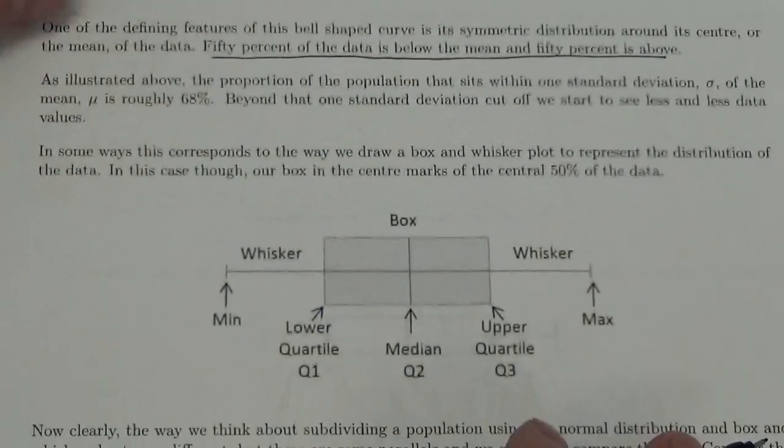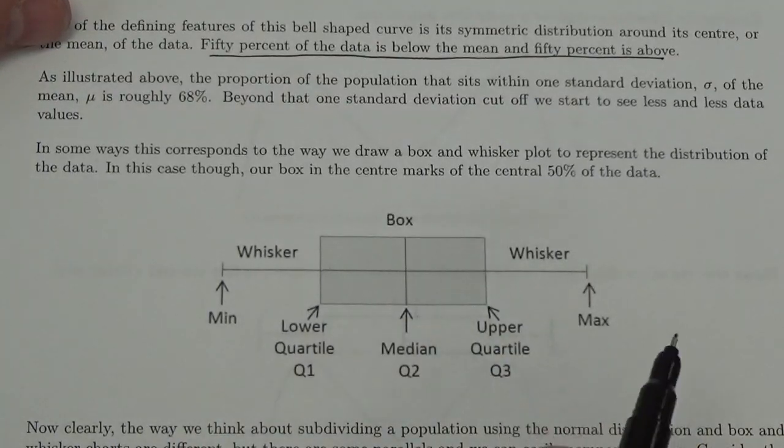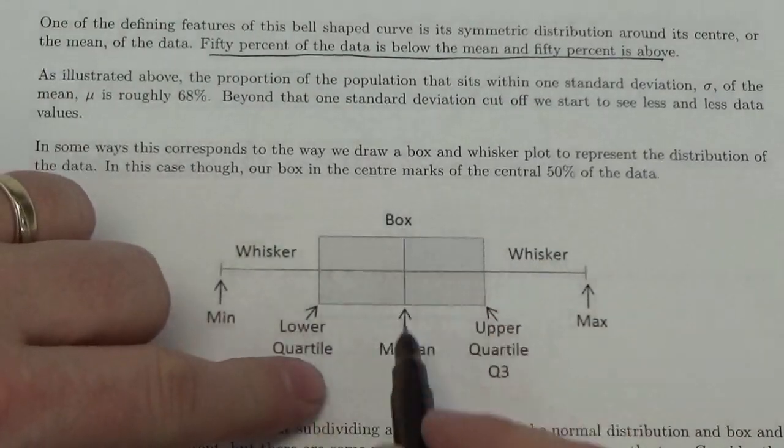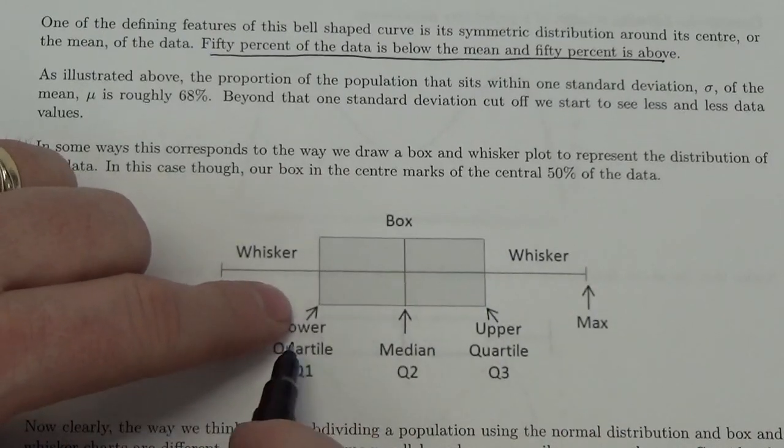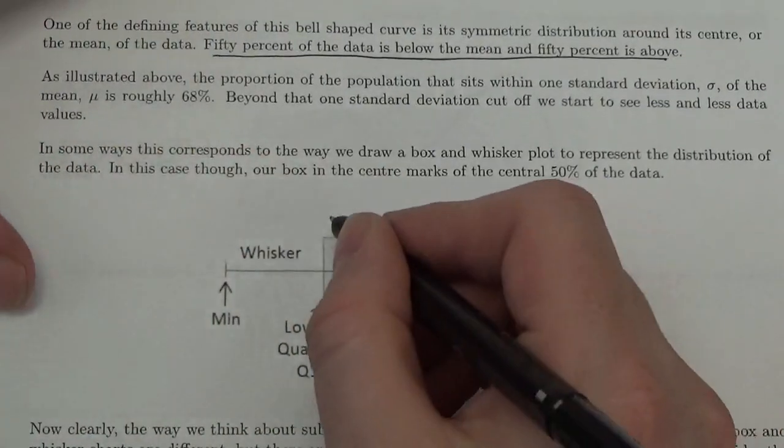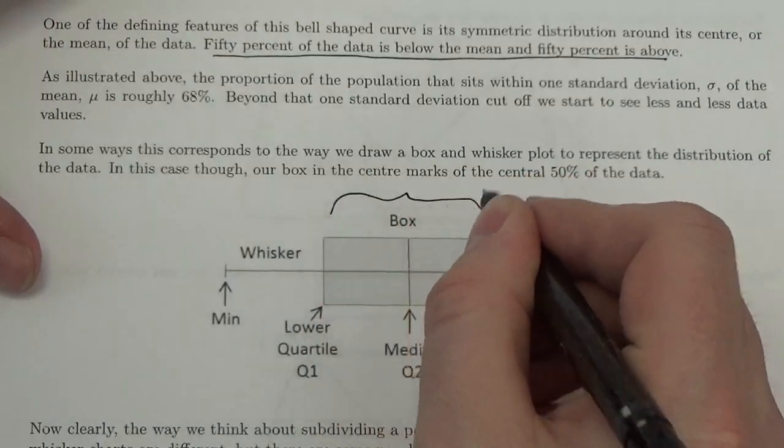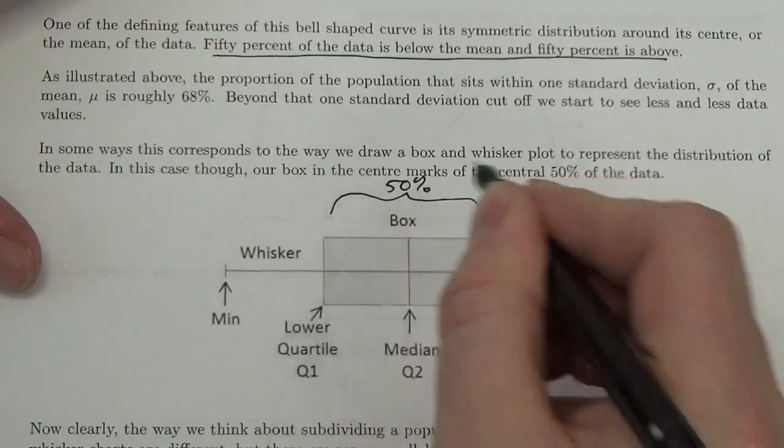In some ways, this corresponds to a box and whisker plot. Because remember, the box and whisker plot, we identify the median, and then we go to the lower quartile and the upper quartile. Now, granted, this is supposed to represent 50% of the data.